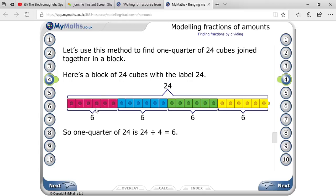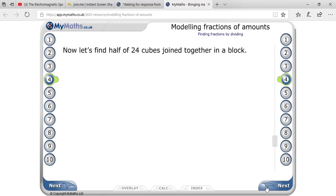So each color shows one-quarter of total. Each color, that is one-quarter of total, that is one-quarter of 24 is 6. One more question: find one-half of 24 blocks joined together.